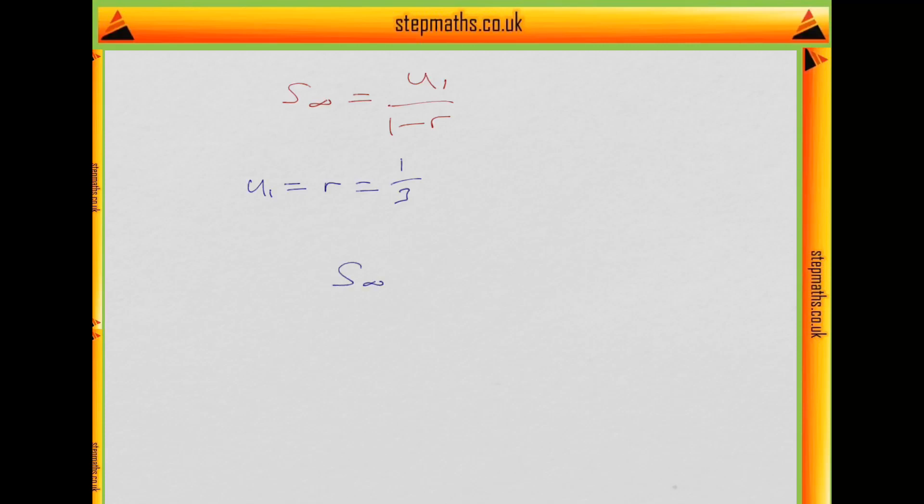So, our sum to infinity is simply 1 third over 1 minus 1 third, which is 1 third over 2 thirds, which is 1 half.